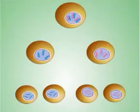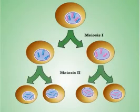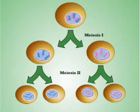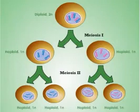Meiosis consists of two divisions: meiosis I and meiosis II. Meiosis I actually reduces the chromosome number, forming two haploid cells. Meiosis II further divides the chromosomes so that four unique gametes are created.